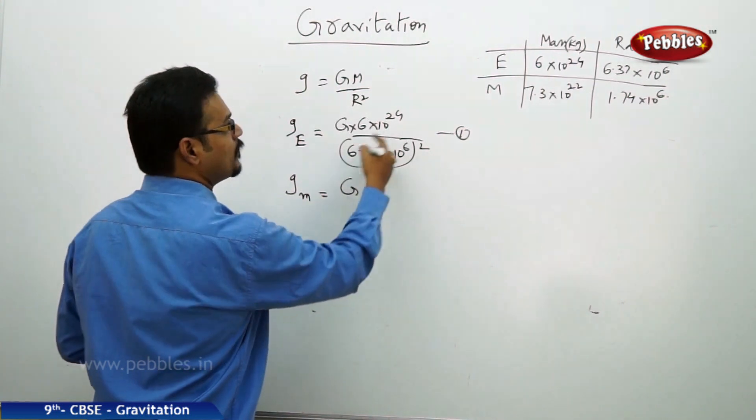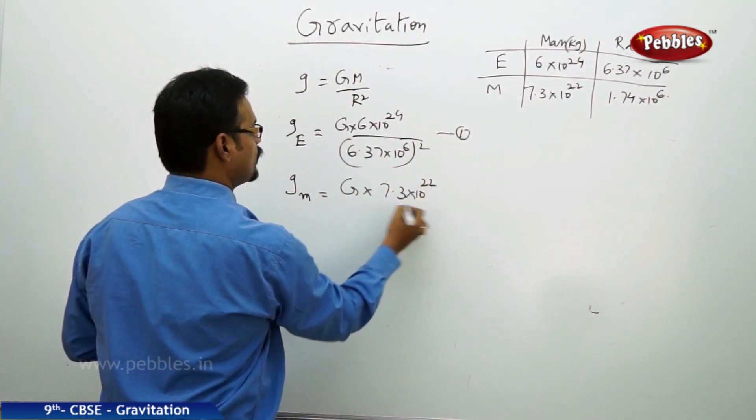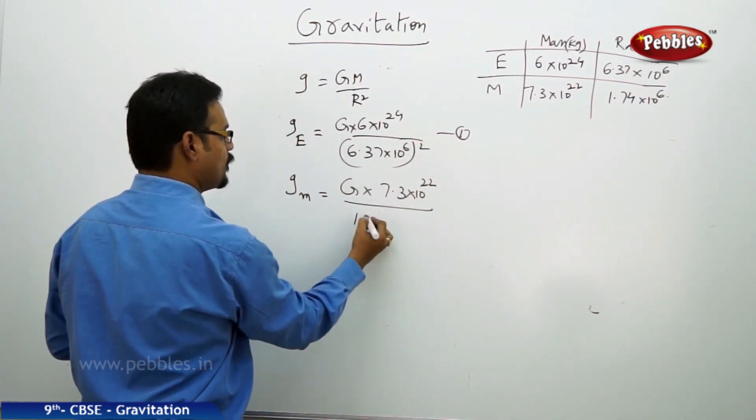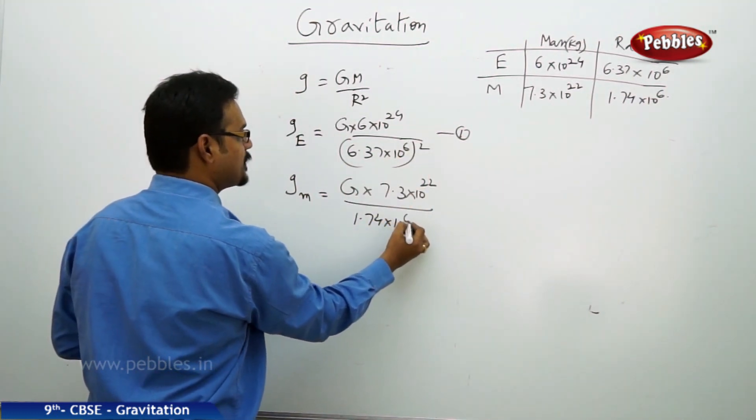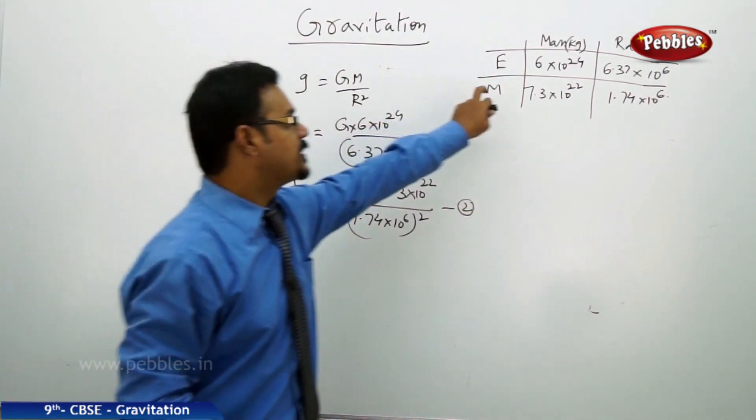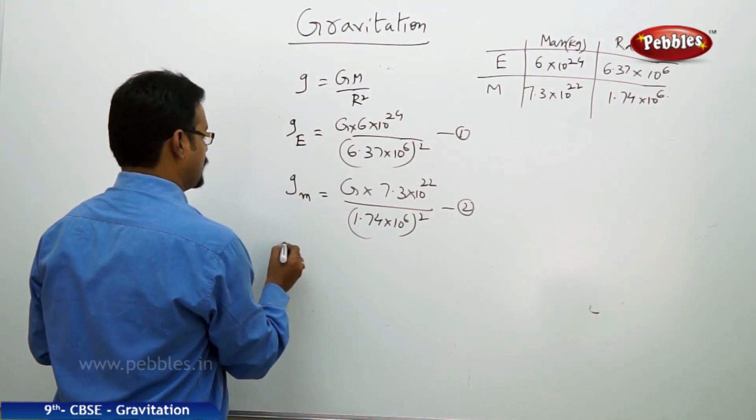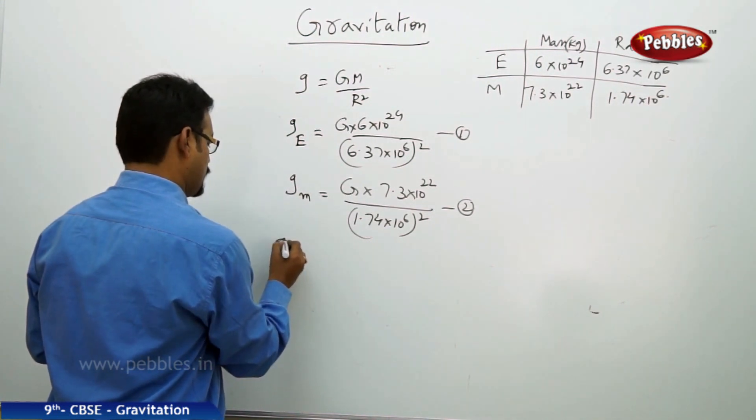Now g on the moon: capital G into mass of the moon is 7.3 into 10 power 22, by radius 1.74 into 10 power 6 whole squared. I'm just substituting the values by seeing this table.